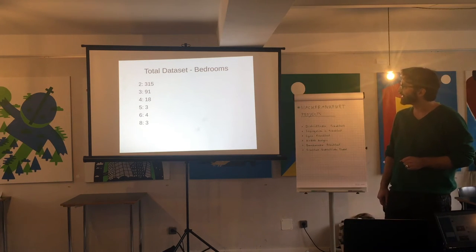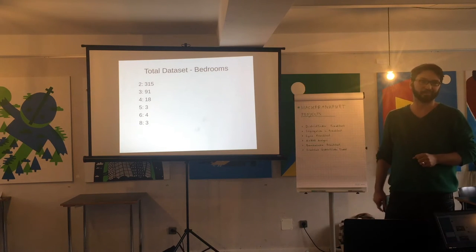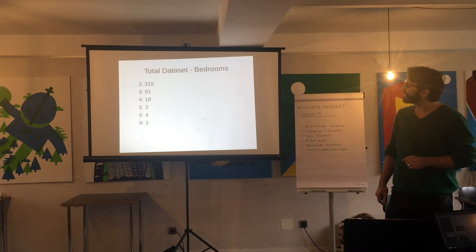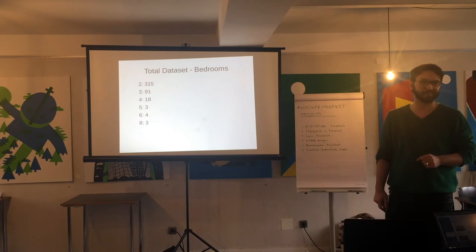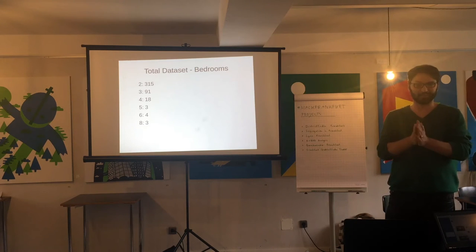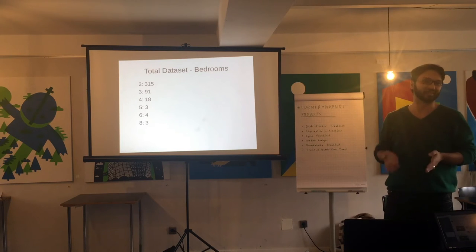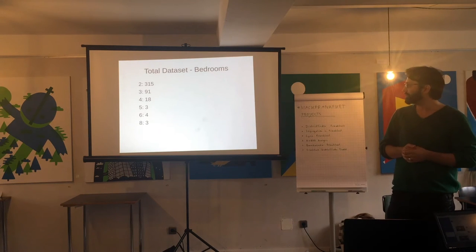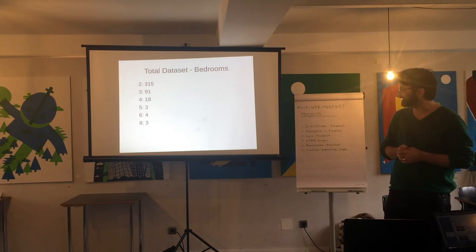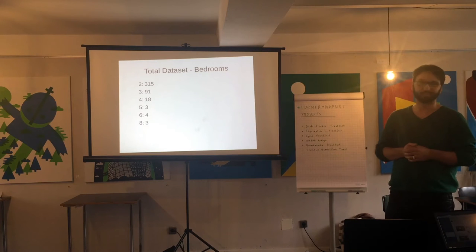From that open dataset, there are some listings which one could have a look at because they have multiple bedrooms on offer, which is a bit strange. The question is whether something on Airbnb is private or if it's commercial — that's the very important question, because if it's commercial, it actually is against the law. There are three listings that have eight bedrooms, which is quite a lot to offer.